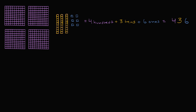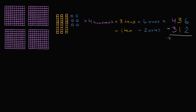Now let's subtract from that the number three hundred and twelve. If we are subtracting three hundred and twelve — we had six ones before, we're taking away two ones. We're taking away one ten. And we're taking away three hundreds.